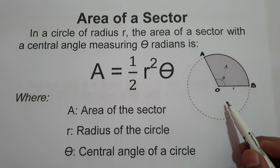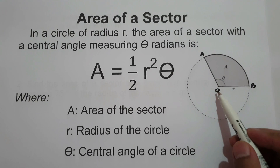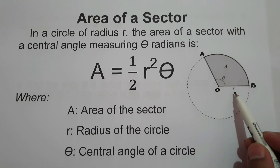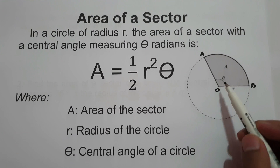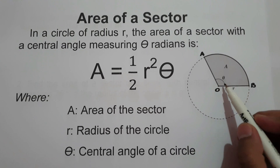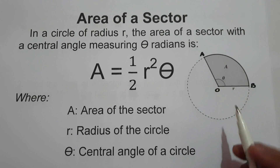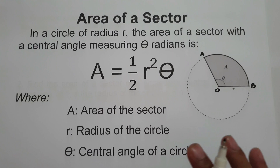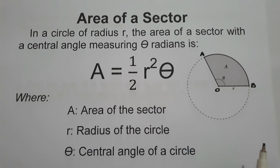As you can see in the given figure, in circle O, OA and OB are the radii, and this angle is what we call the central angle. The shaded region is the area of the sector. These are the pieces of information we are going to use in order to find the area of the sector. So let's start and have an example.